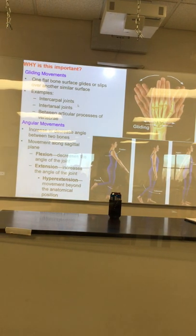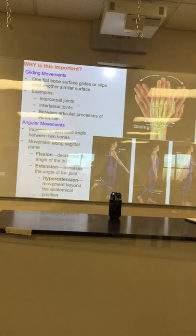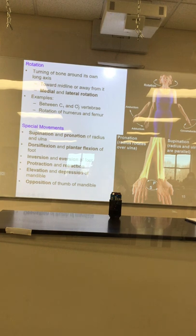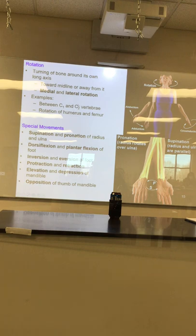Angular movements like flexion and extension — decreasing angles, increasing angles. Abduction and adduction: abduction is raising the arms, adduction is lowering the arms. You can do the same thing with the legs. Then pronation and supination: to pronate is to put the thumbs down; to supinate is to bring the thumbs back around, palms up — soup, soup. We use these concepts.